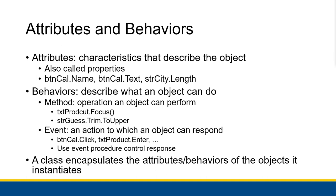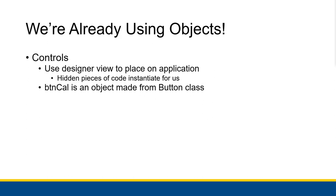When we actually have a class, that class encapsulates all of the attributes and behaviors of the objects that it will then instantiate. You can think of it as a capsule — it's holding on to all of those attributes and behaviors and doling them out as it's creating those objects. We've already been using objects this whole time, given that Visual Basic is an object-oriented language. Controls, for example, are all objects. You use the designer view to place them on the application, and they're actually instantiated automatically. It's just hidden pieces of code instantiating those controls and setting them up with all the proper properties based on how we position them in the designer view. We are still accessing their properties, methods, and events using that dot-access operator.